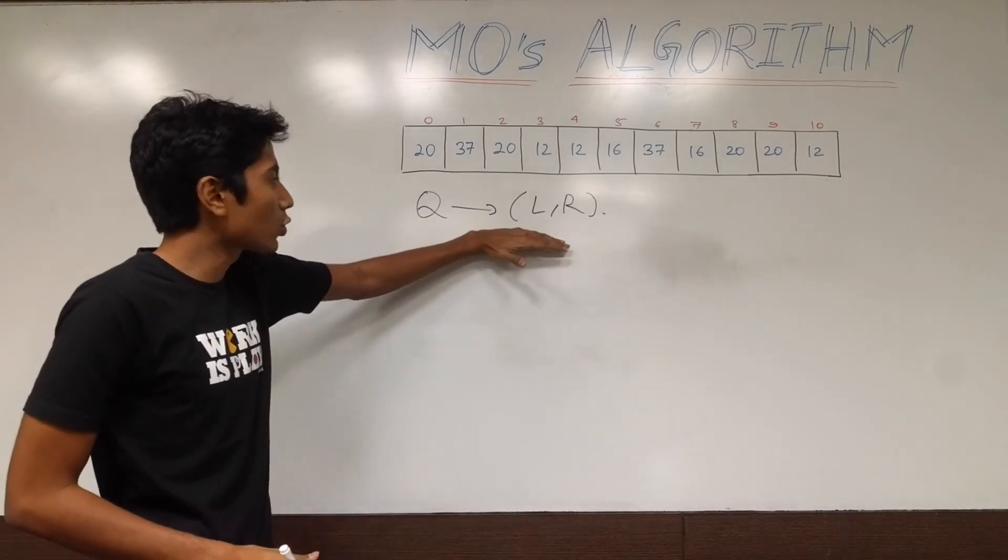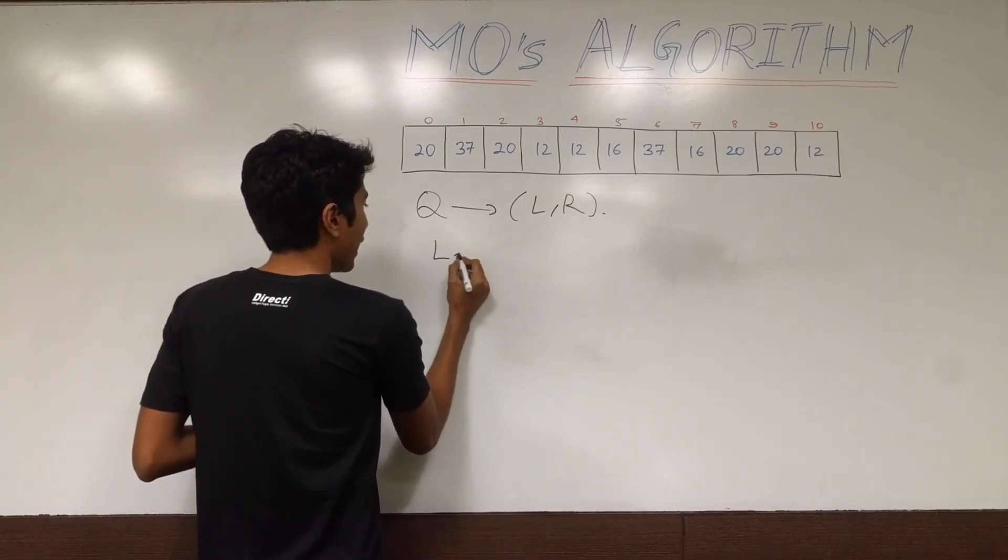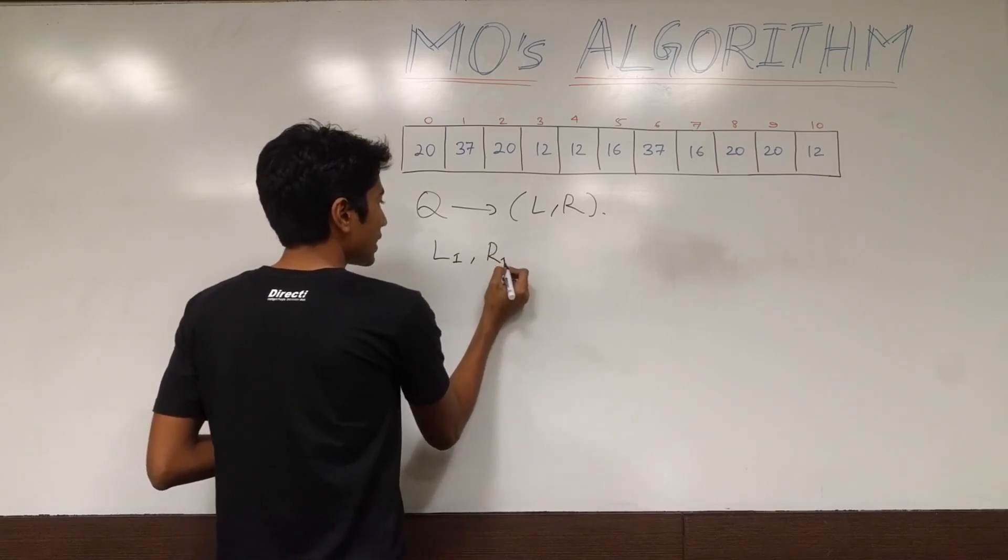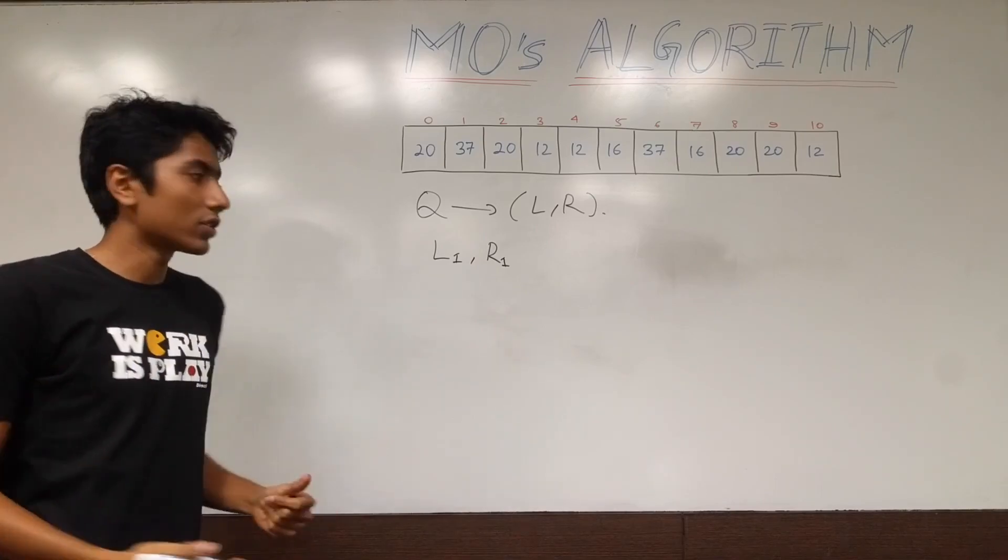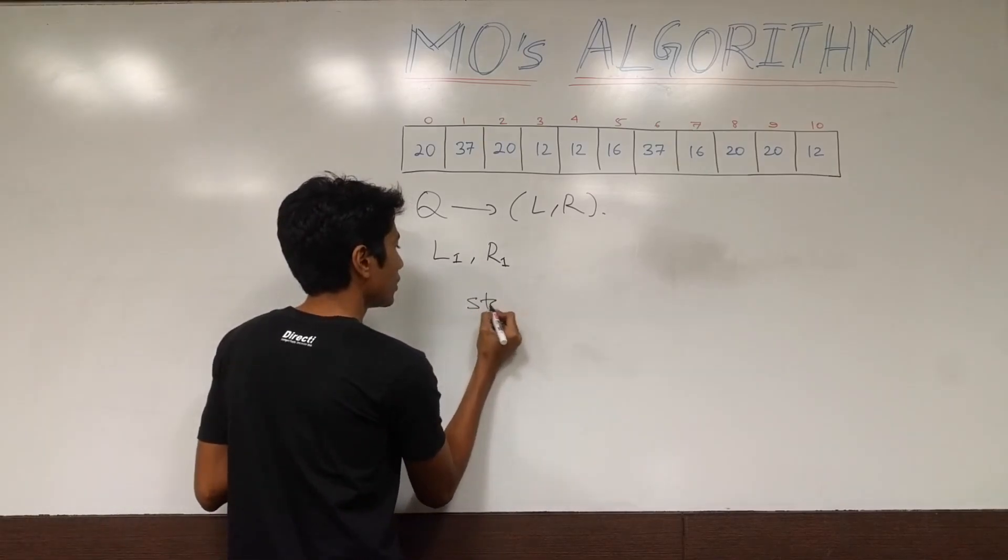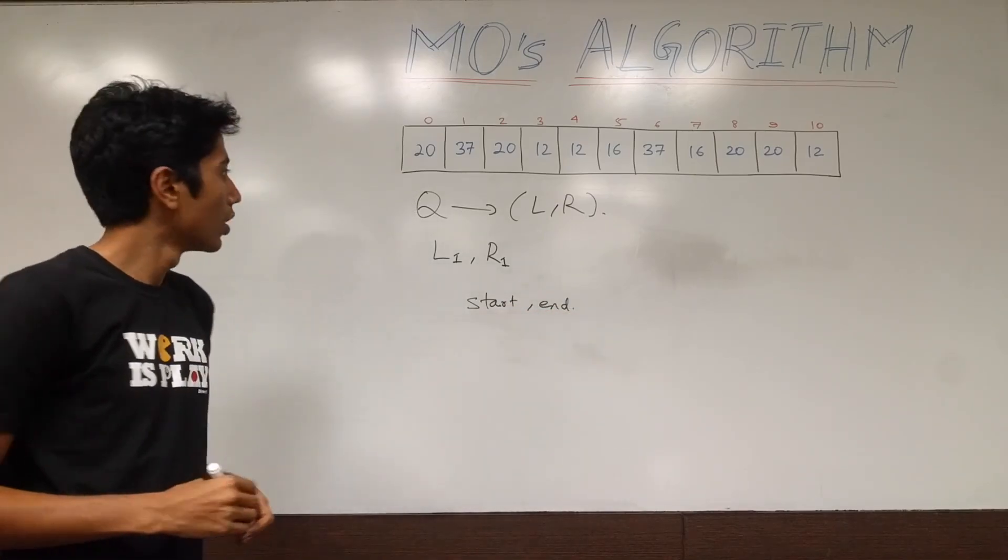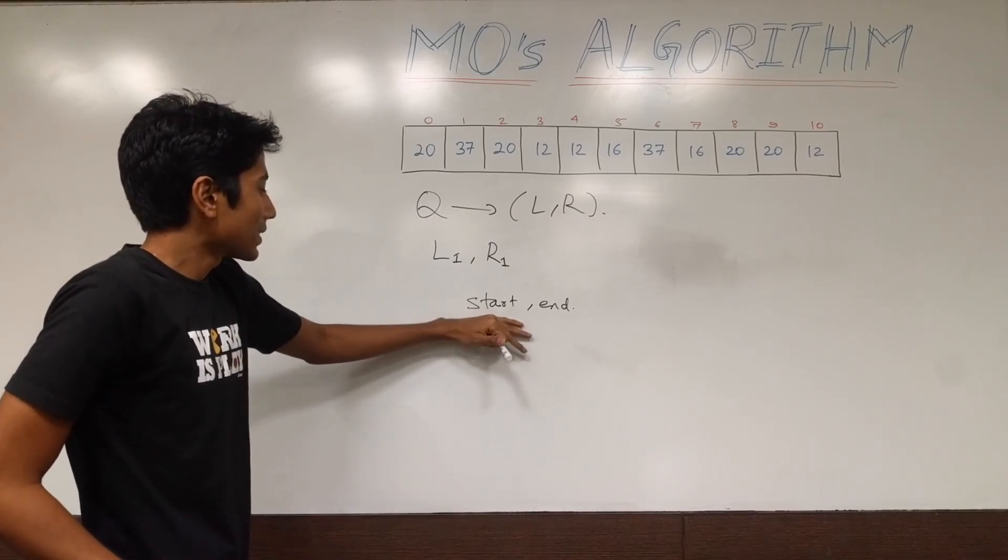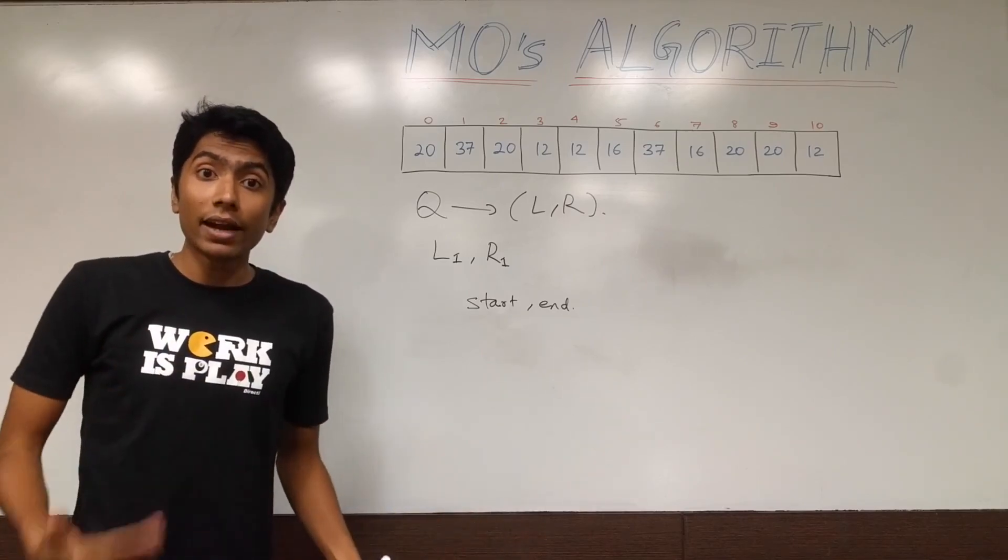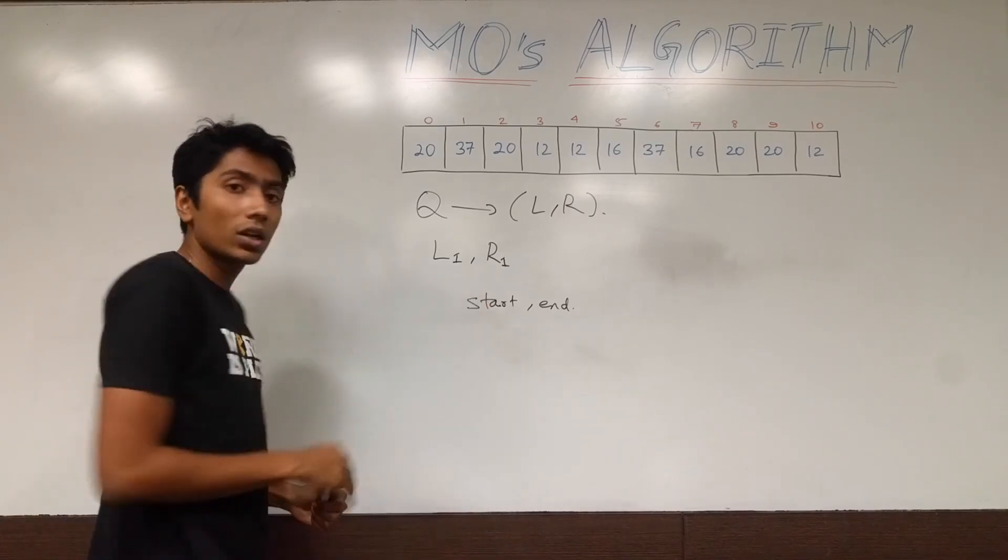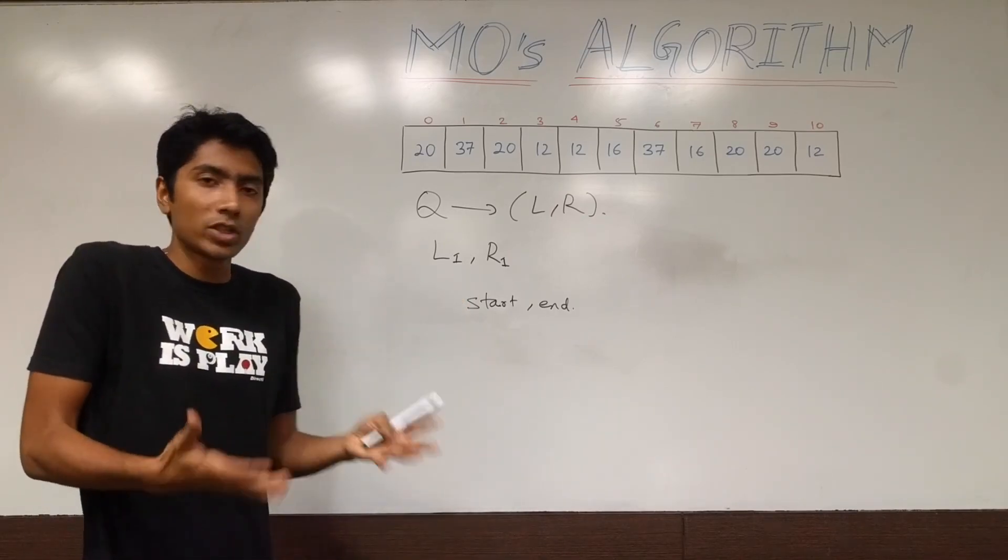Alright, you have these queries. The very first query that you're going to get is going to be l1 and r1. These are the indexes and let's have two pointers which will be start and end. So start and end are going to be defining the range that we are in right now and l1 and r1 is the range which has been asked to be solved by us.